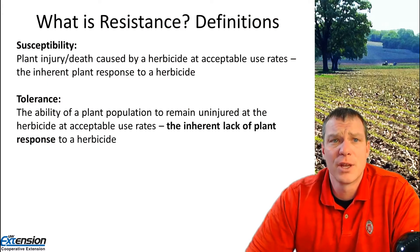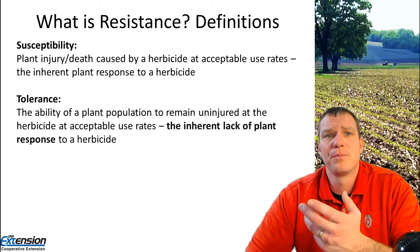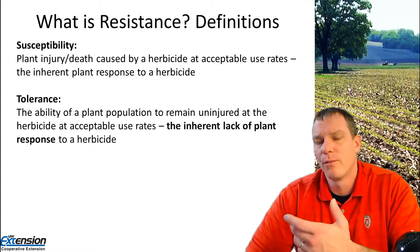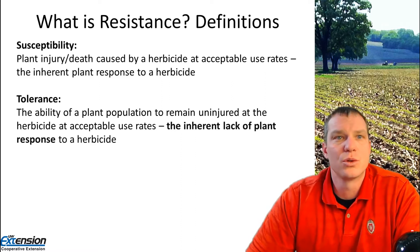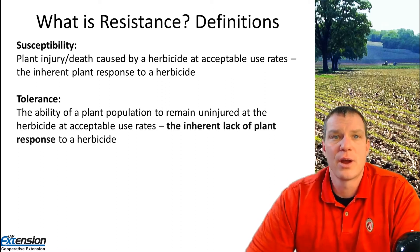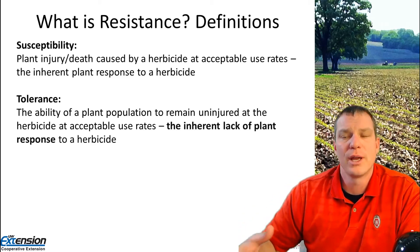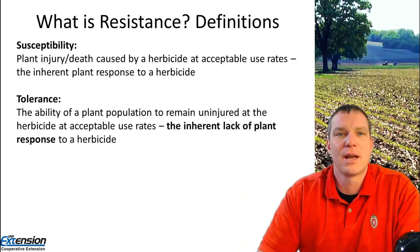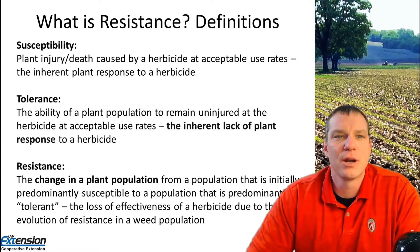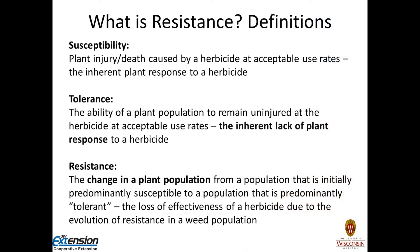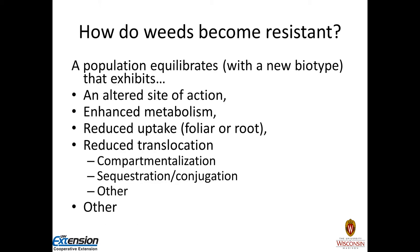Let's first define susceptibility and resistance. Susceptibility is where you expect injury or plant death for all weeds in a population at acceptable use rates of a particular herbicide. Tolerance, on the other hand, is where a herbicide never was fully effective against that particular weed population. Resistance is a change in a plant population from one that is initially susceptible to one that is predominantly tolerant — it is the loss of effectiveness of a herbicide due to the evolution of resistance in the weed population. It develops over time, usually because of a change at a single or multiple sites of action, until resistant plants take over an entire population.